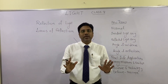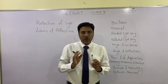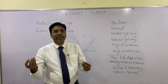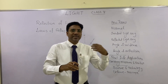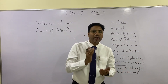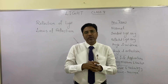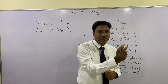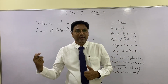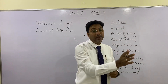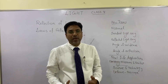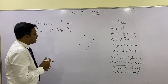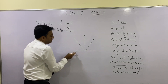Whatever things around us we see, we see them only because of the reflection property of light. So what is reflection? When light falls on any object it bounces back — that property of light is called reflection. We can't see air because when light passes through air there is no reflection from the air molecules; the light rays simply pass through.